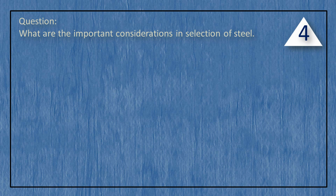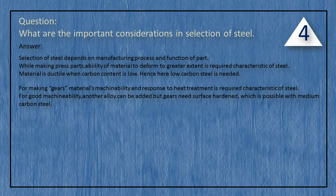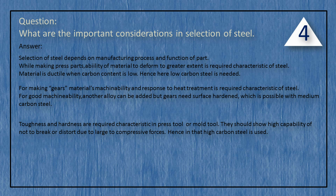What are the important considerations in the selection of steel? Selection of steel depends on manufacturing process and function of the part. While making pressed parts, the ability of the material to deform to a greater extent is required, so low carbon steel is needed. For making gears, machinability and response to heat treatment are required. For good machinability, alloying elements can be added, but gears need surface hardening, which is possible with medium carbon steel. Toughness and hardness are required for press tools and mold tools, which must resist large compressive forces, so high carbon steel is used.